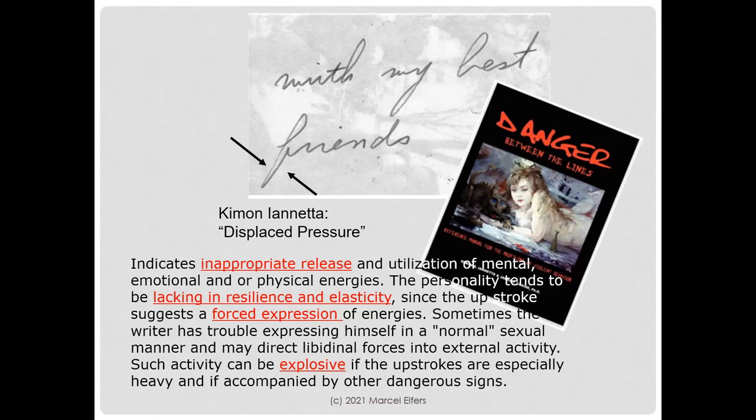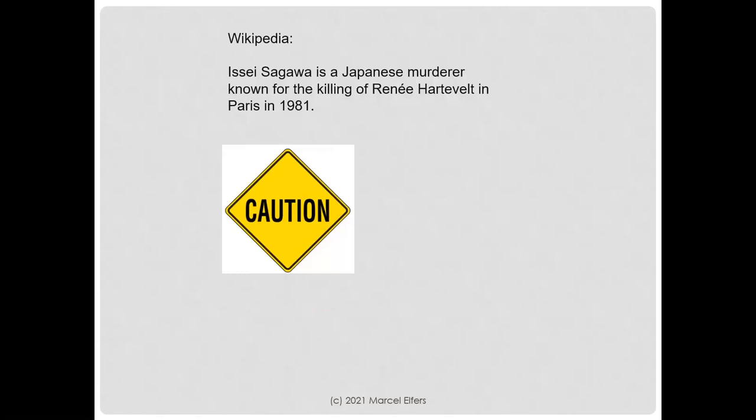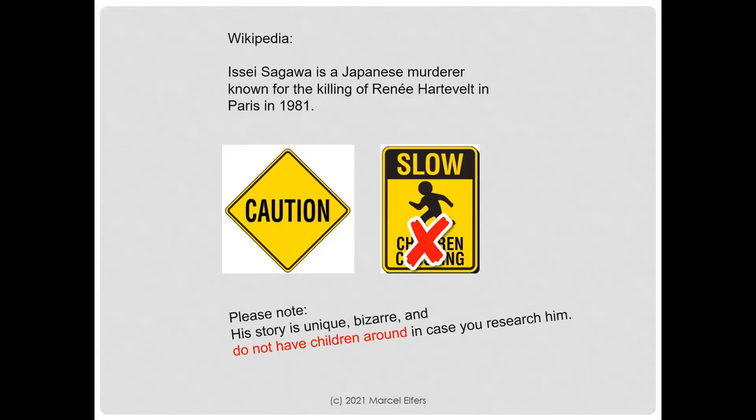Displaced pressure is something to look for in handwriting. If you're on the dating scene, remember this is not a good handwriting characteristic. The author of this note is Isai Sagawa, a Japanese murderer known for the killing of René Hartfeld in Paris in 1981. If you're going to research and look him up, caution is advised and do not have children around.